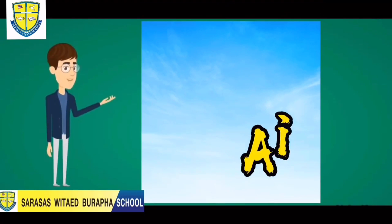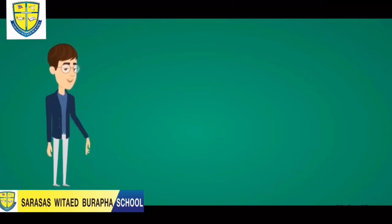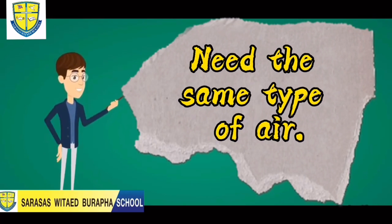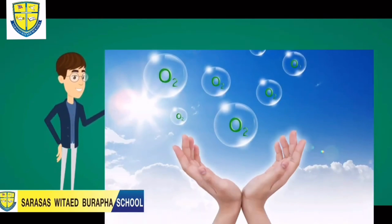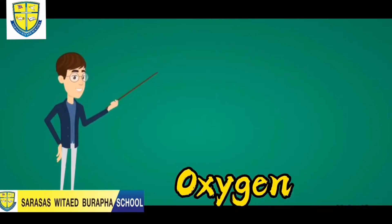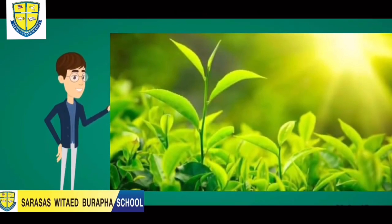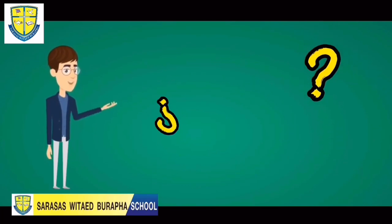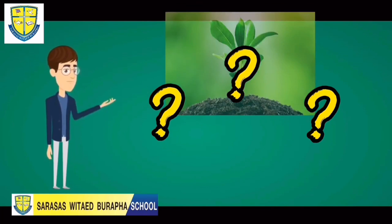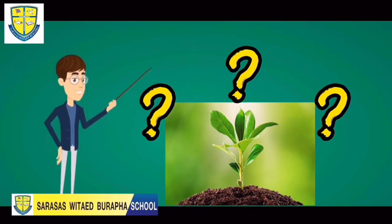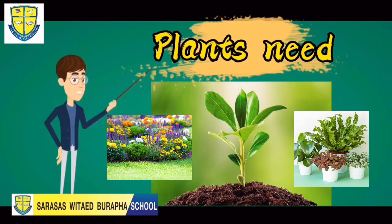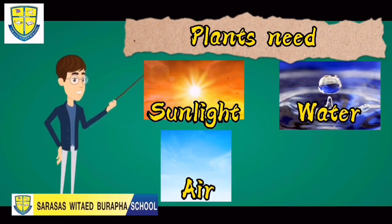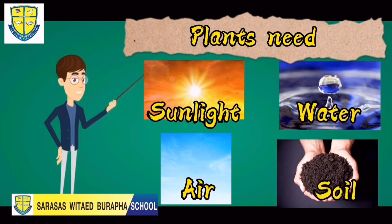Next, we have air. Animals and humans both need the same type of air, and that air is oxygen. While plants are different. Plants need sunlight, water, air, and soil.